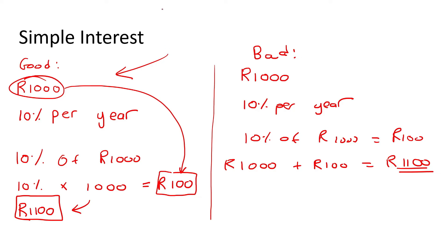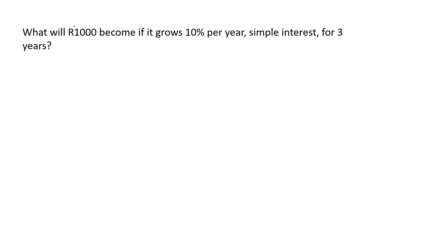So that's just the introduction to interest. We get different types — we get compound interest and we get simple interest. But in grade eight we're mostly going to focus on simple interest, and we're going to do things like hire purchase, which I'll be showing you in one of our next lessons. For this lesson, we're going to practise simple interest a little further, now doing things like three years. So it says: what will 1,000 rand become if it grows at 10% per year for three years?